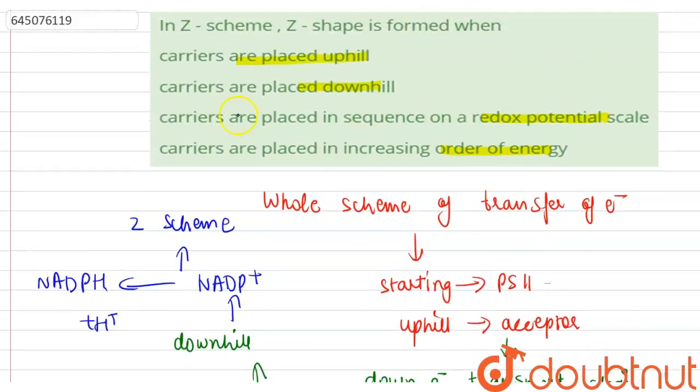So the correct option here is carriers are placed in sequence on a redox potential scale. The other options are incorrect - carriers are placed uphill no, carriers are placed downhill, both uphill and downhill is there, so carriers are not placed in increasing order of energy. So the correct option is carriers are placed in sequence on a redox potential scale.